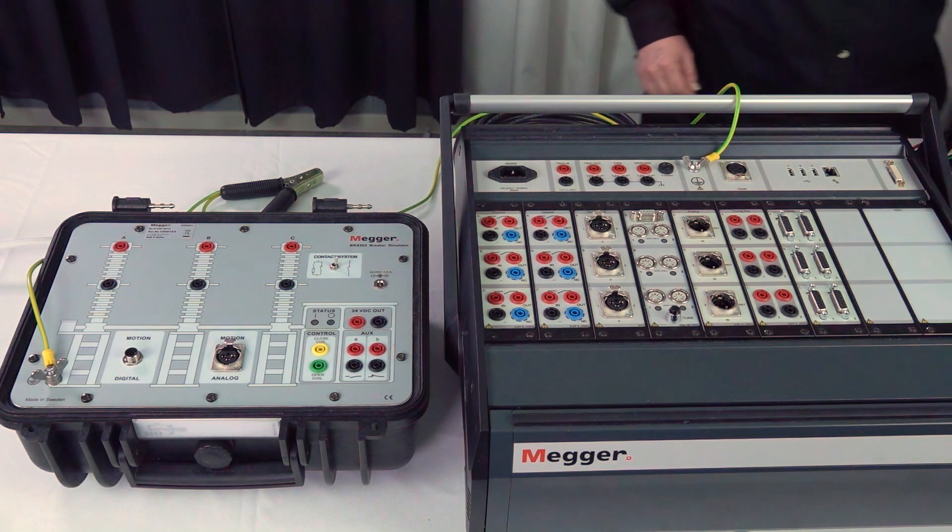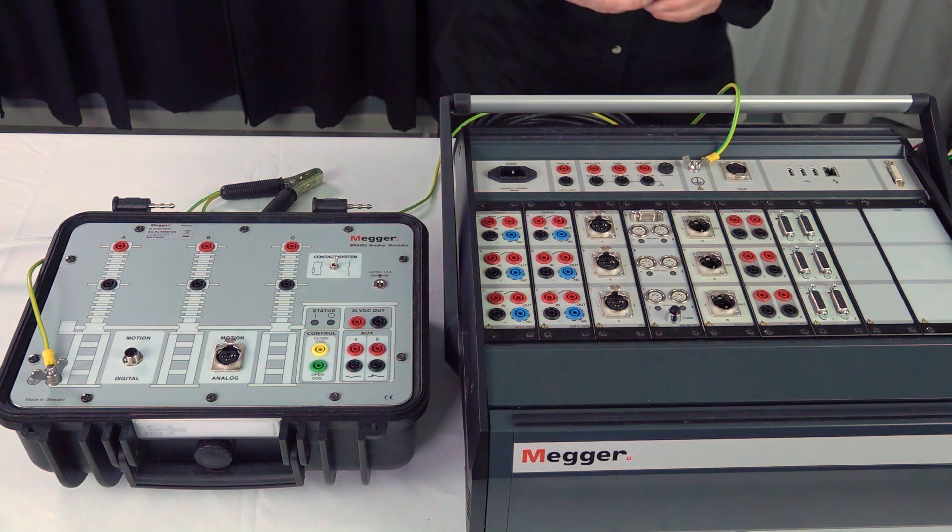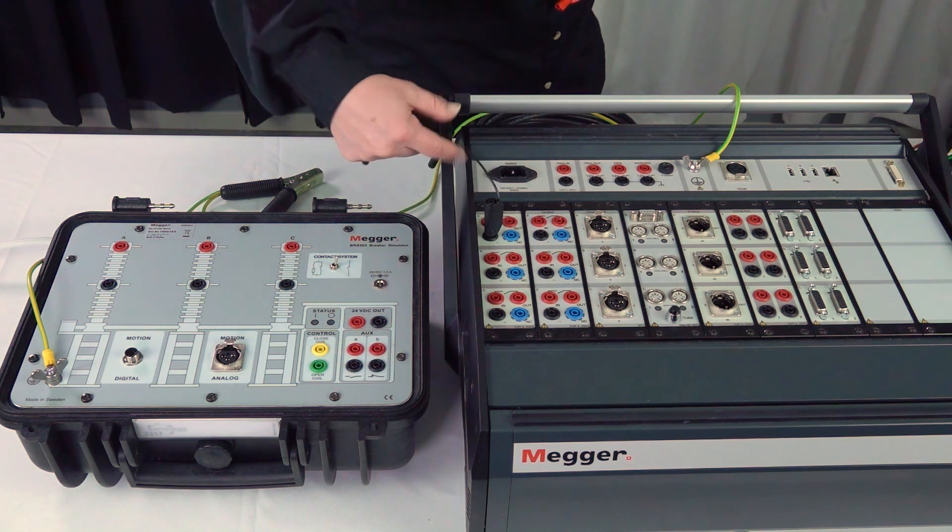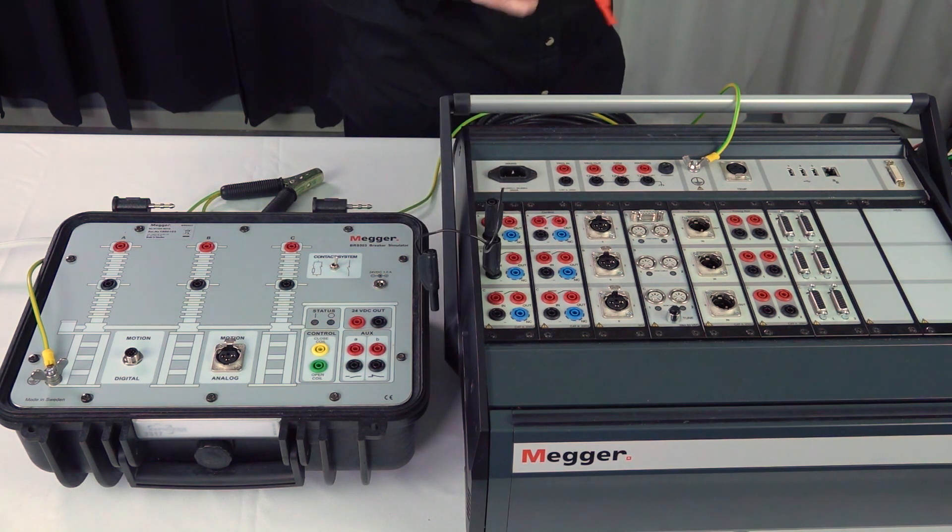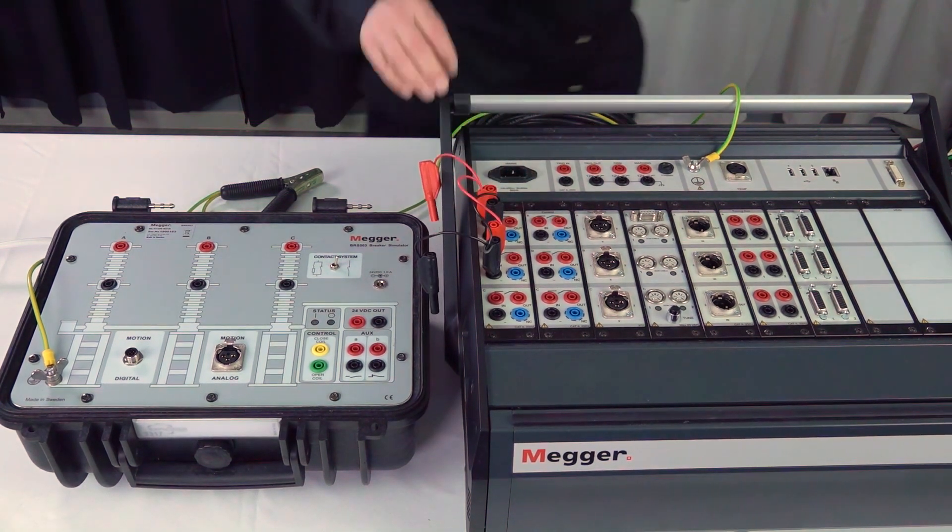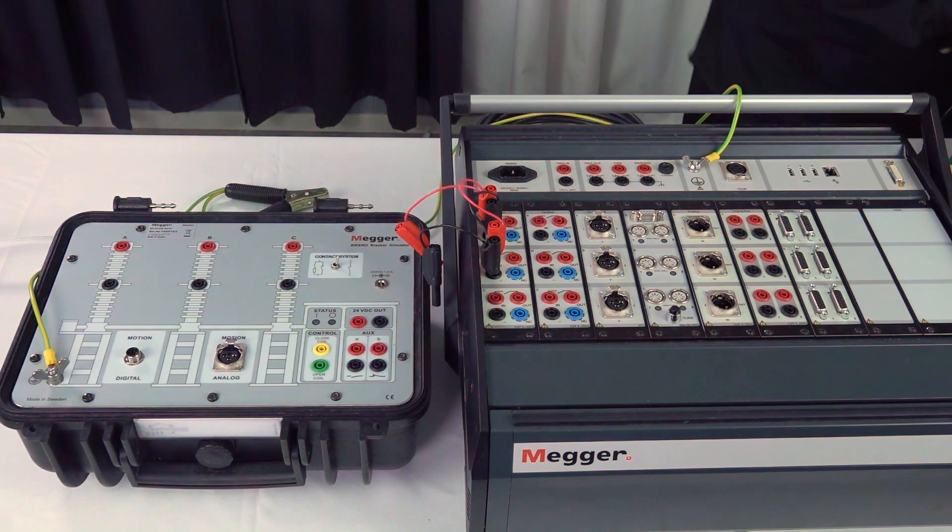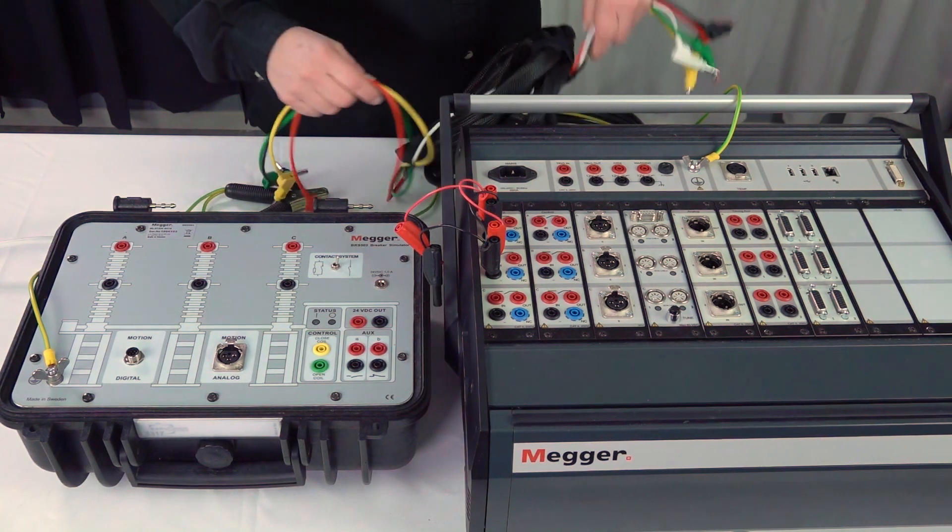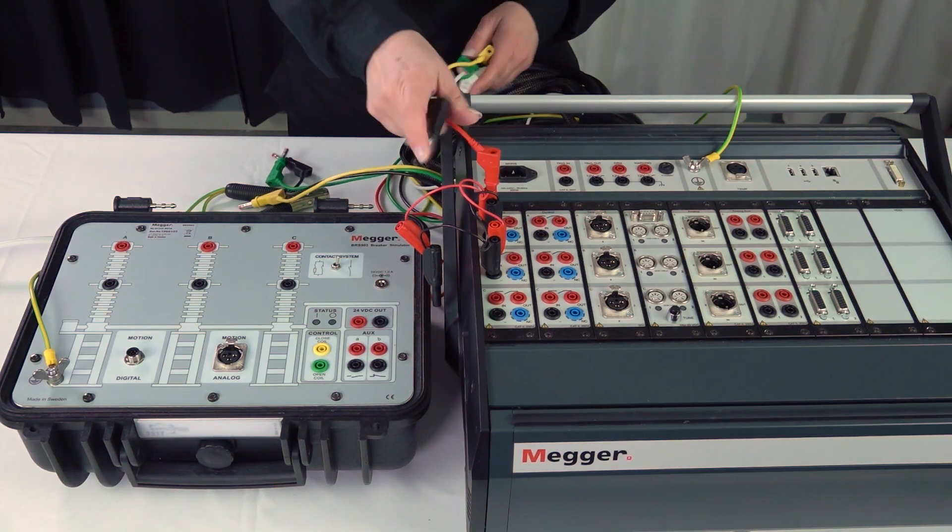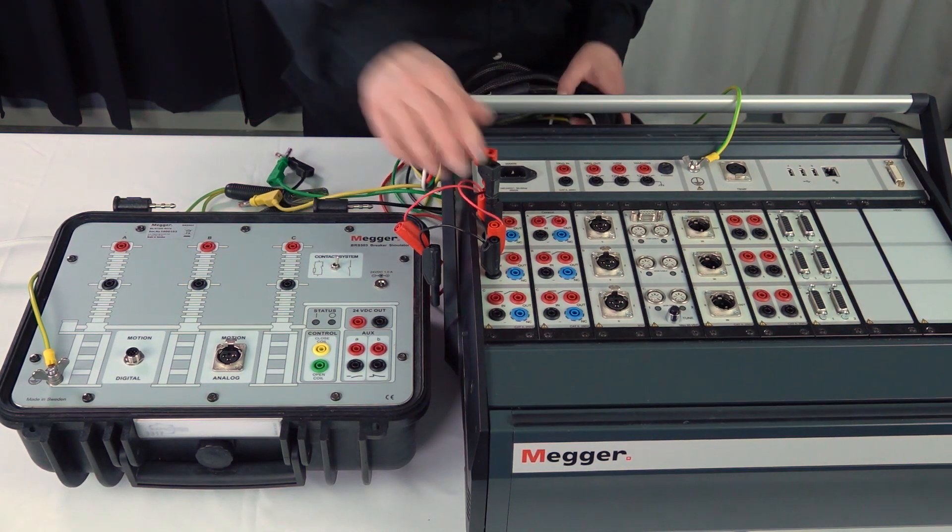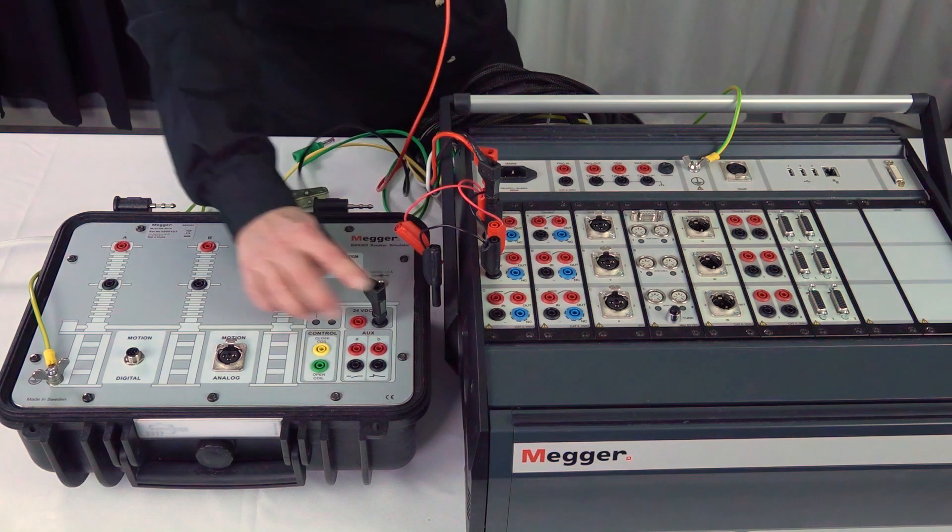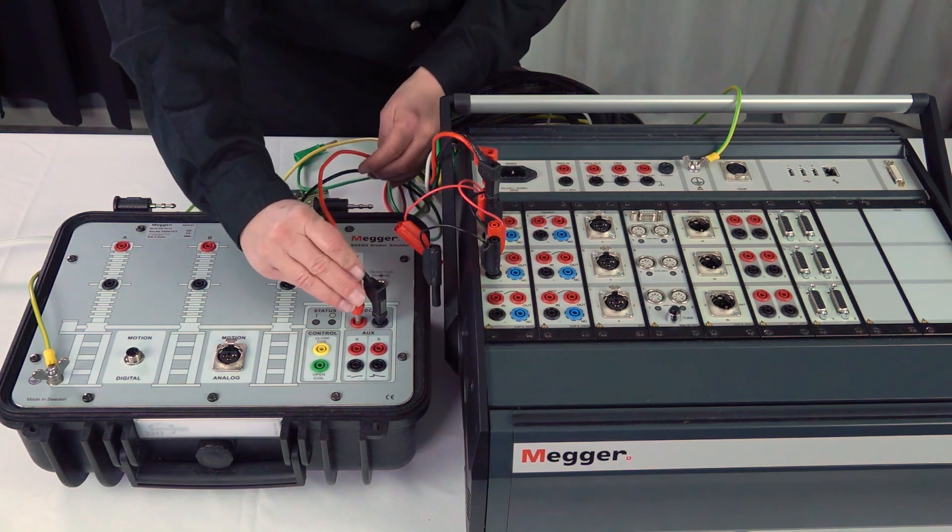After that we continue with the power supplies. We connect between the close and the open channel. We supply the minus and we supply the plus and loop that with a loop cable. We continue with the supply cable. We're using the control cable to the same plus and minus and we get this power from the 24 volt DC output of the simulator.